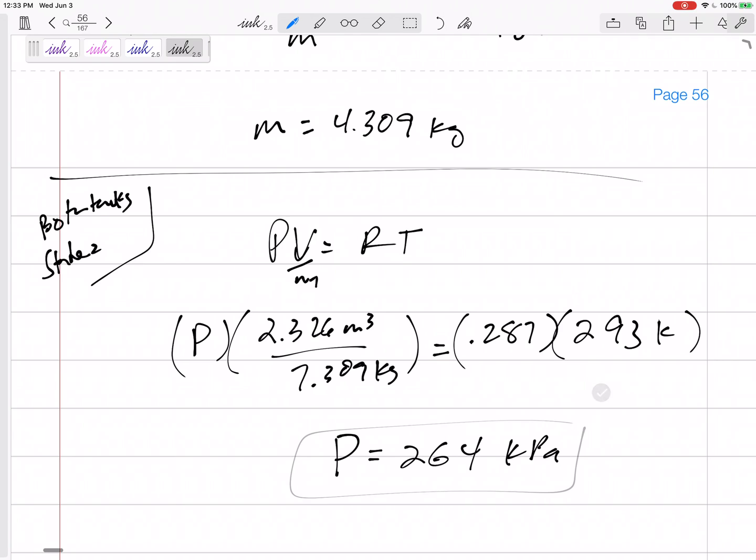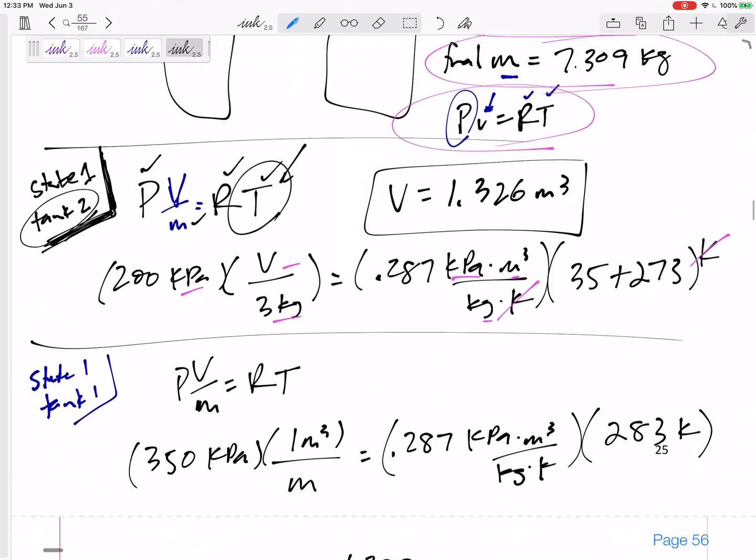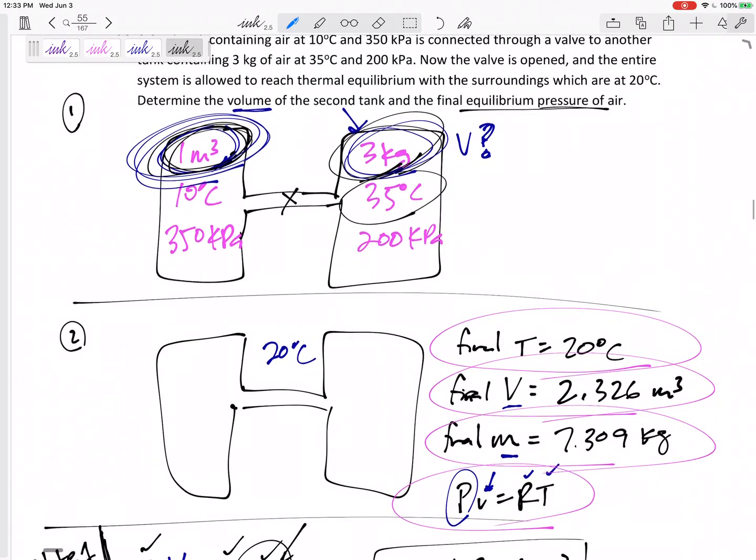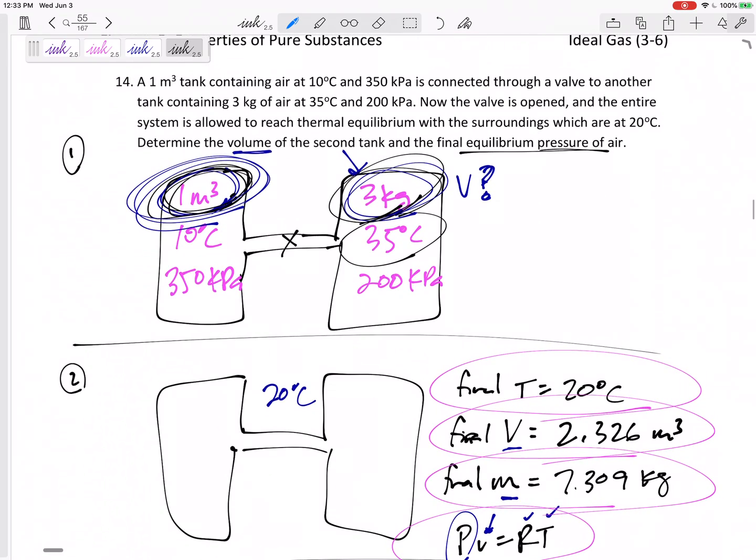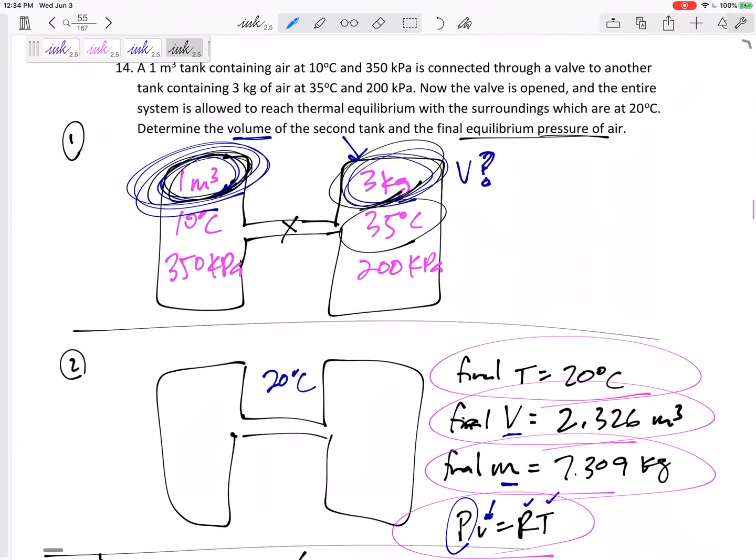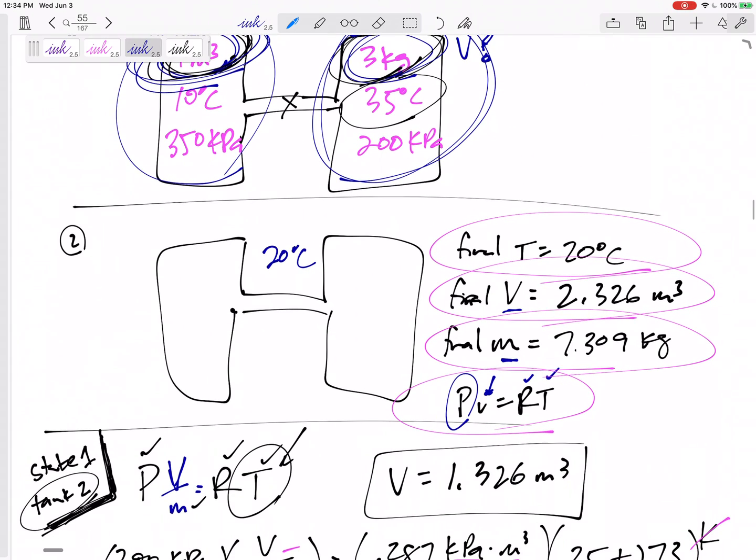All right, man, that was interesting. Nothing terribly difficult. It was just deciphering what the problem was telling us, what it was asking for. How do we get there using our ideal gas equation? So in general, be looking out for these problems where you know the mass but you don't know the volume. You can use PV=RT to find that, or you know the volume and temperature and pressure and you don't know the mass. You can use PV=RT to get there.